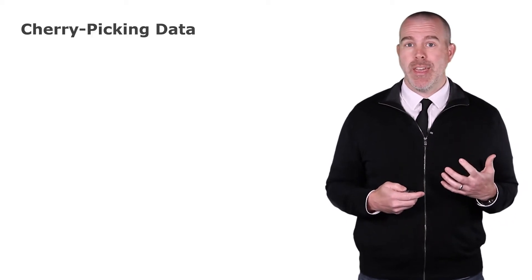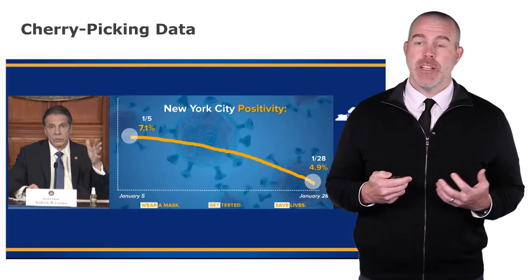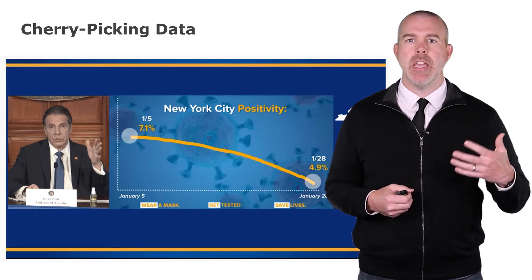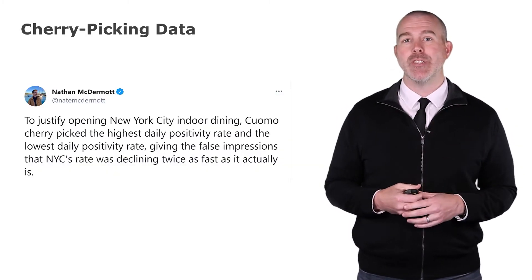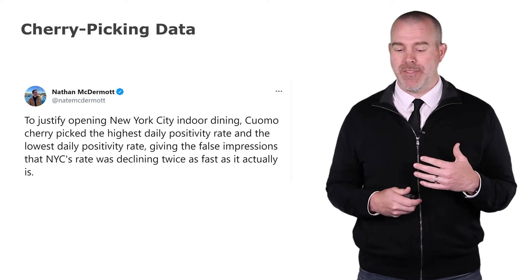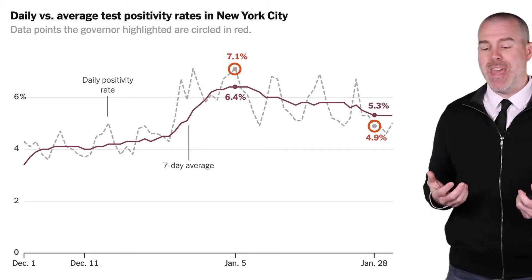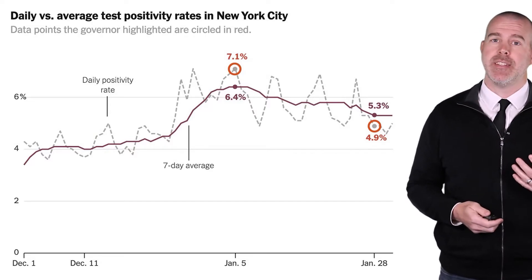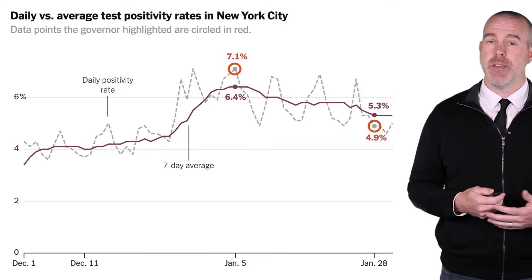The first is cherry-picking your data — choosing specific times or specific instances that exaggerate something. Here's a report that Governor Cuomo from New York used in one of his daily COVID reports, showing a huge decline in the positivity rate. What Nathan McDermott noted on Twitter is that he picked the highest daily positivity rate and then the lowest to give a false impression of a huge drop. A more accurate view shows a peak of 7.1% and a low of 4.9% — it is declining, but not as significantly. We want to show all data points in between; it's really misleading to just show those two.